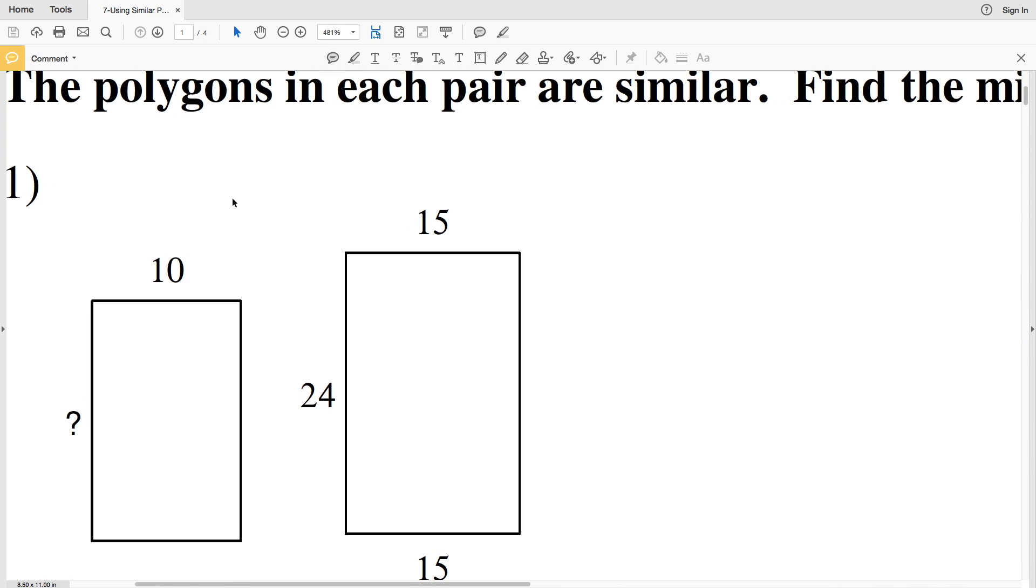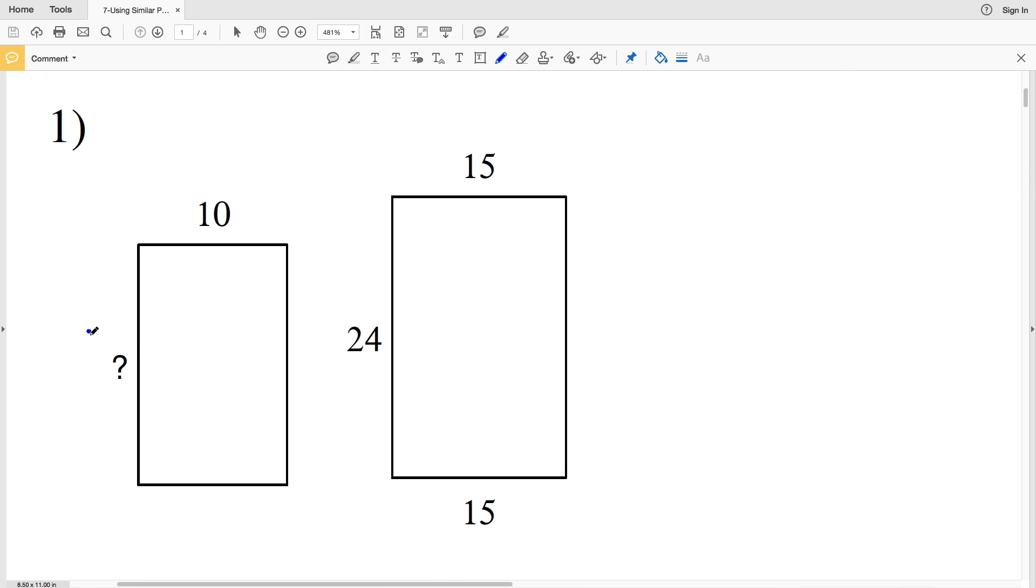In number one, let's call this missing side length X, so we're going to set up a proportion and then solve for X. This little side 10 is to the side X as the smaller side 15 is to the larger side 24. And now we'll cross multiply: 10 times 24 is equal to X times 15.